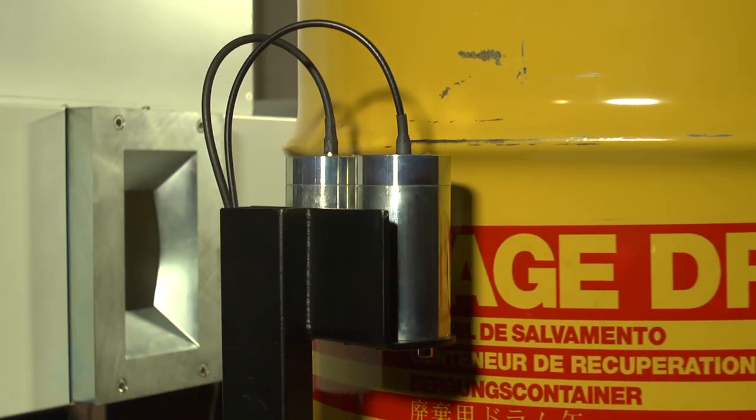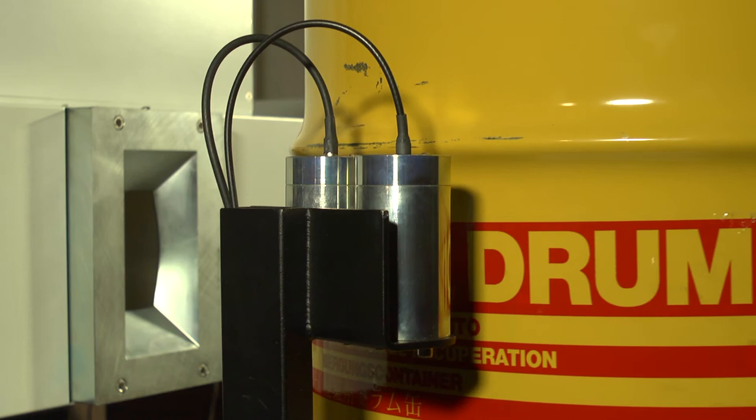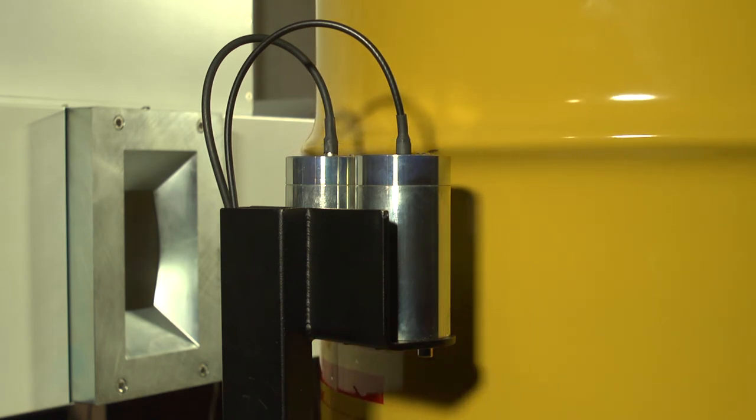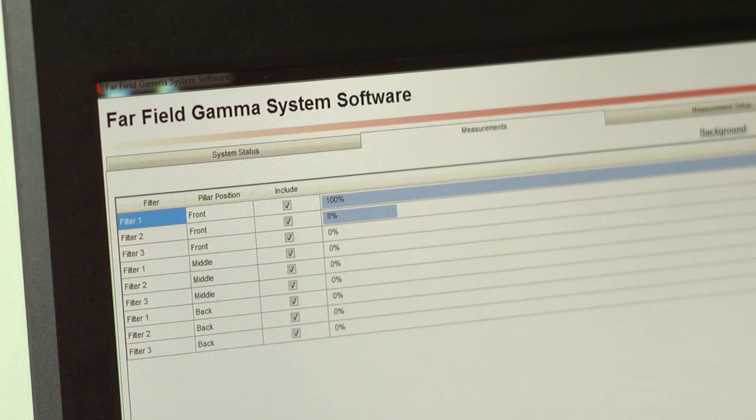Typically, one or two Geiger-Müller dose rate detectors are incorporated into the design. They are positioned to determine the drum surface dose rate. This information is used to establish the measurement conditions.